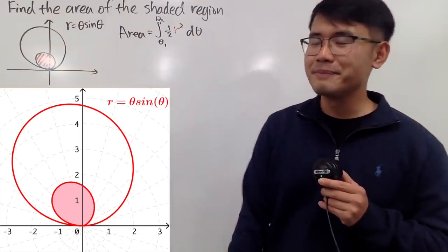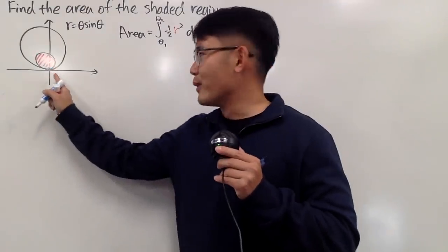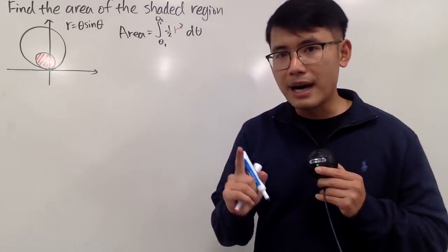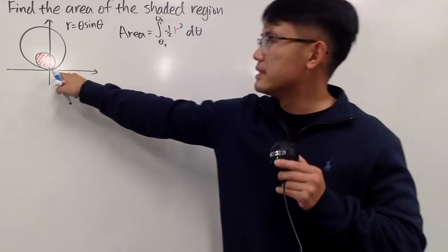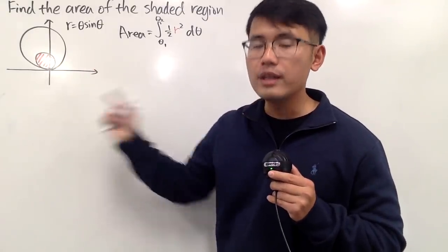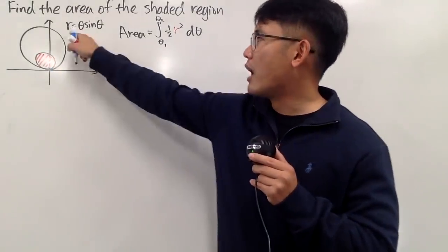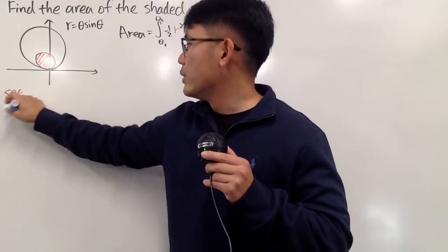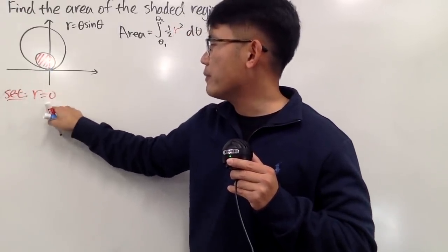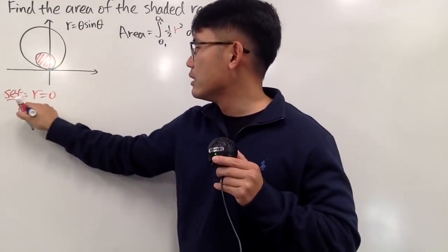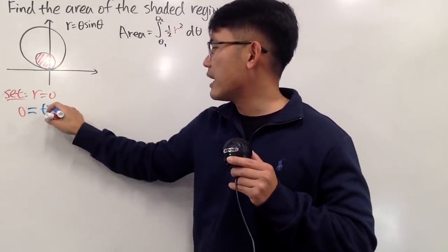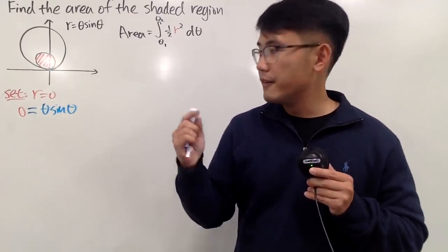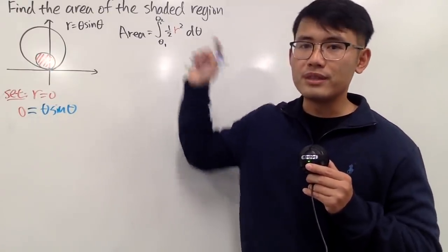Anyway, it just goes around like this, with a loop, and it hits the origin again. Keep in mind, whenever the curve hits the origin in a polar situation, we have to set r equal to 0. So we have 0 equals theta times sine theta — solving this equation is how we figure out theta 1 to theta 2.